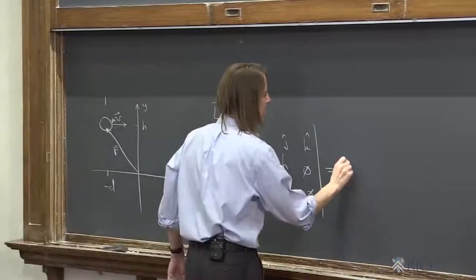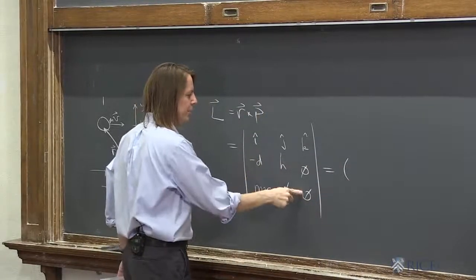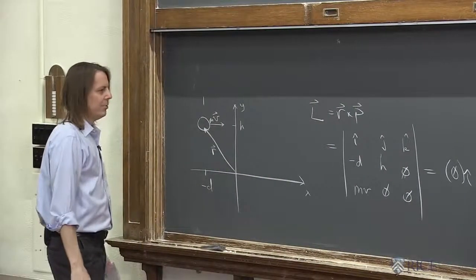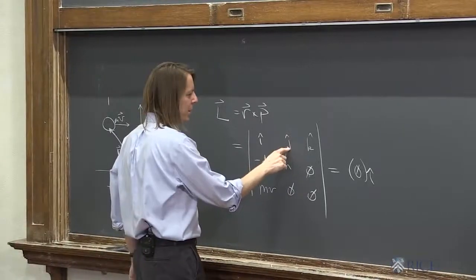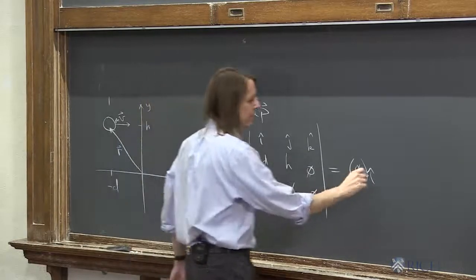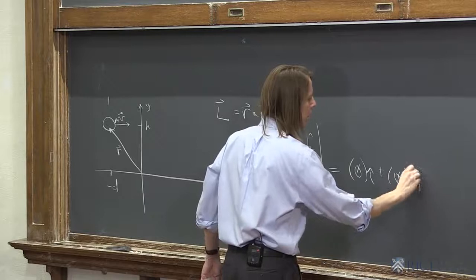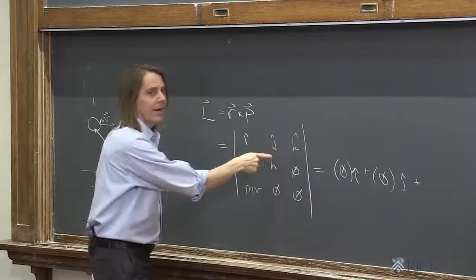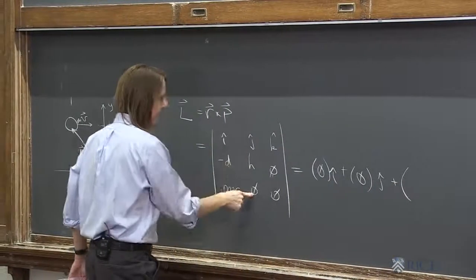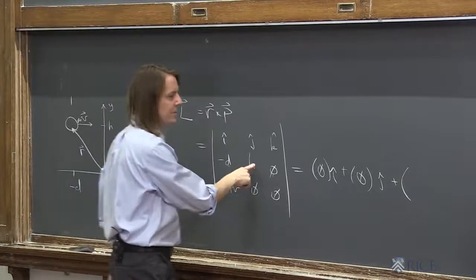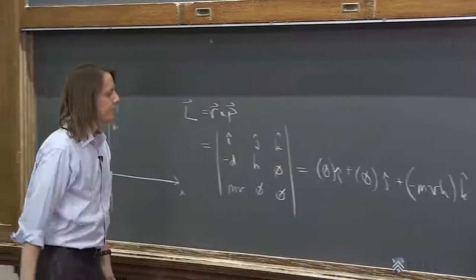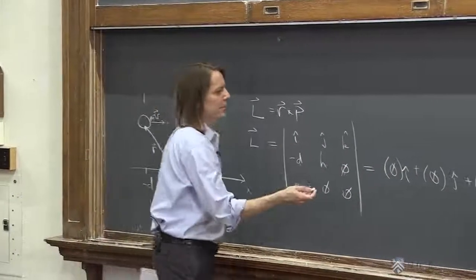Because you can instantly see that your i hat term, zero minus zero, is zero. There is no i hat component to the angular momentum. The j term, the y term, minus zero, d times zero, minus m v times zero. It's also zero. And then finally the k hat term. So now we're back to positive k hat. So we would say it's zero minus m v h. Minus m v h k hat. So you can see all we have left is minus m v h k hat.